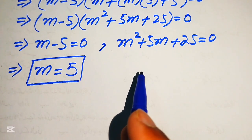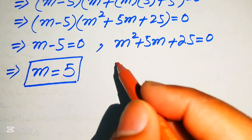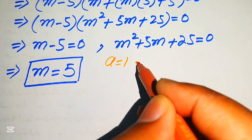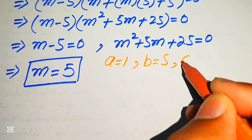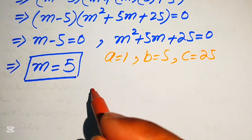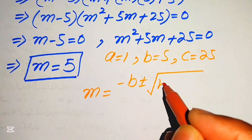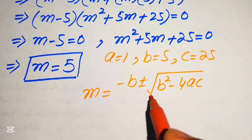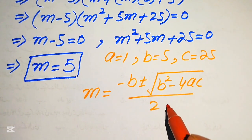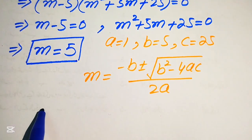This is a quadratic equation in standard form with variable m, and here we will apply the quadratic formula. First we write the coefficients of this equation: a equals to 1, b equals to 5, and c equals to 25. We state the quadratic formula as m equals to minus b plus or minus square root of b squared minus 4ac, divided by 2a.